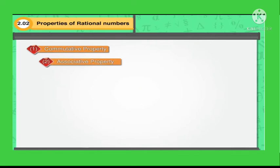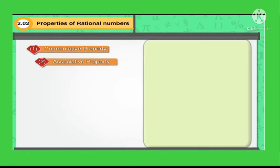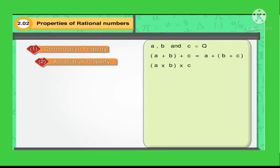Now we will see the second property: associative property. If A, B and C are any rational numbers, then (A plus B) plus C is equal to A plus (B plus C), and (A into B) into C is equal to A into (B into C).